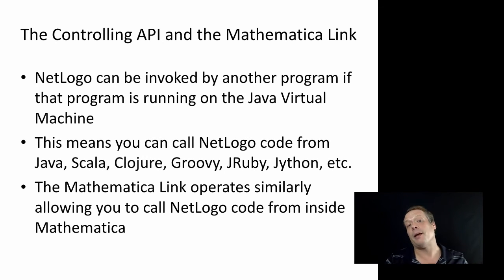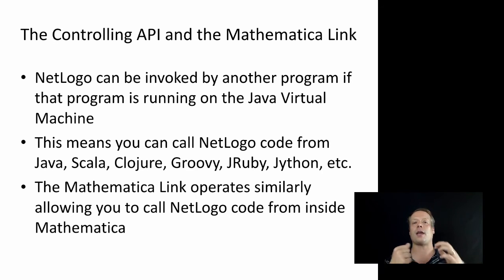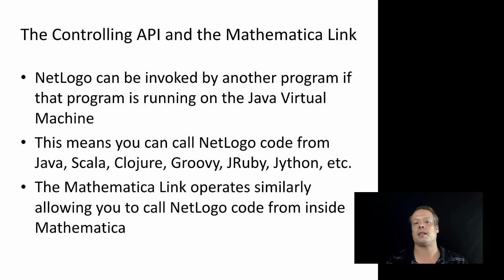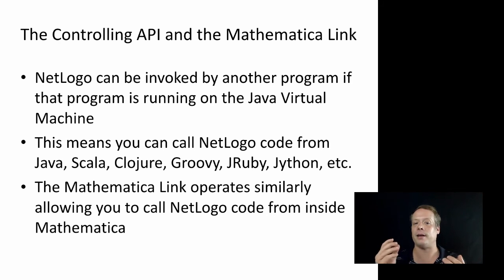Besides the Extensions API, there's also the Controlling API and the Mathematica link, which are closely related. NetLogo can be invoked by another program if that program is capable of running on the Java Virtual Machine. This means you can call NetLogo code directly from a number of other languages like Java, Scala, Clojure, Groovy, JRuby, Jython, and several others.